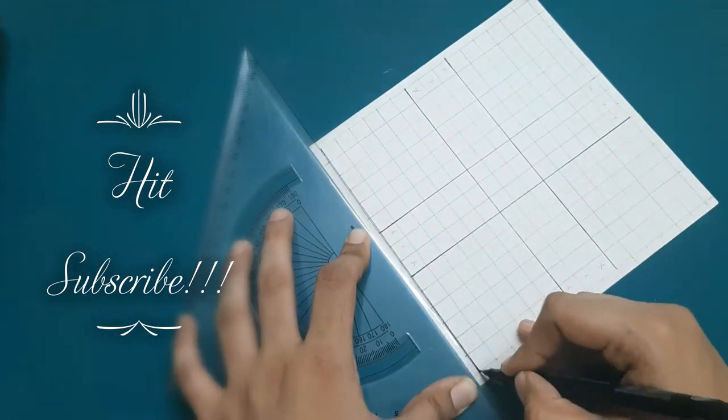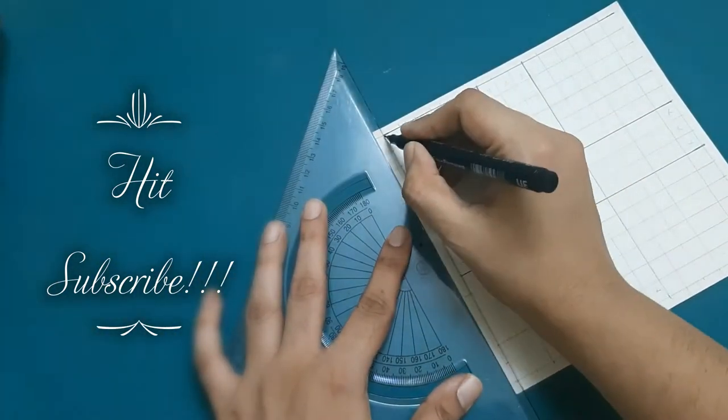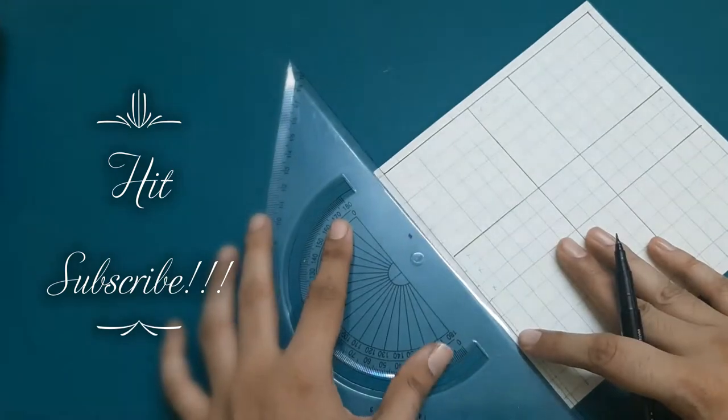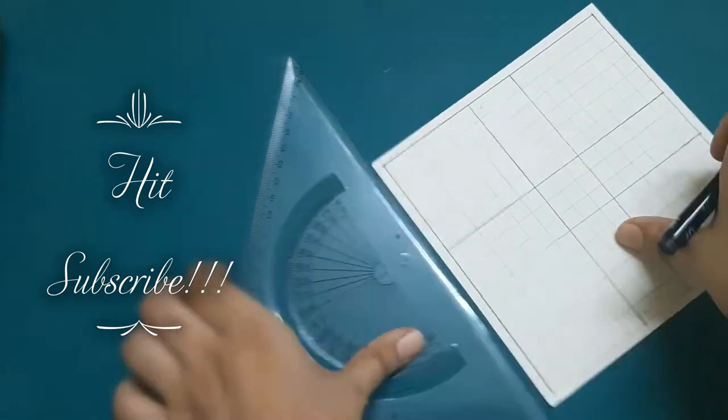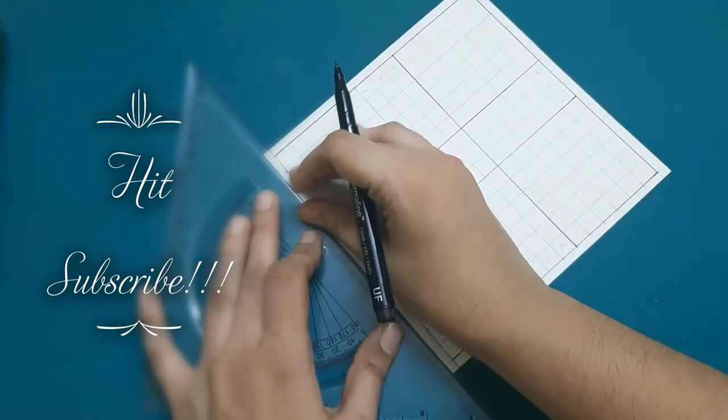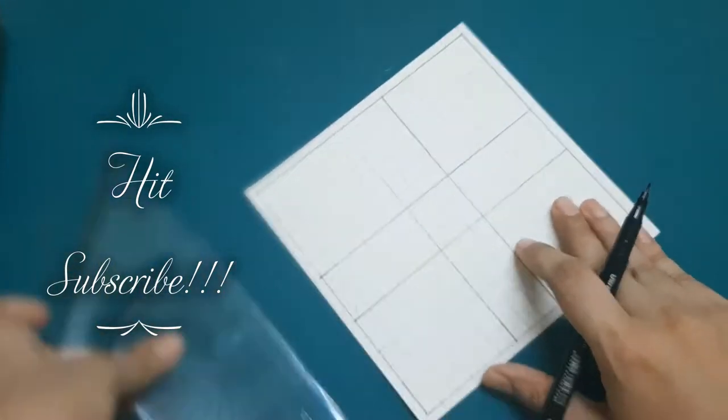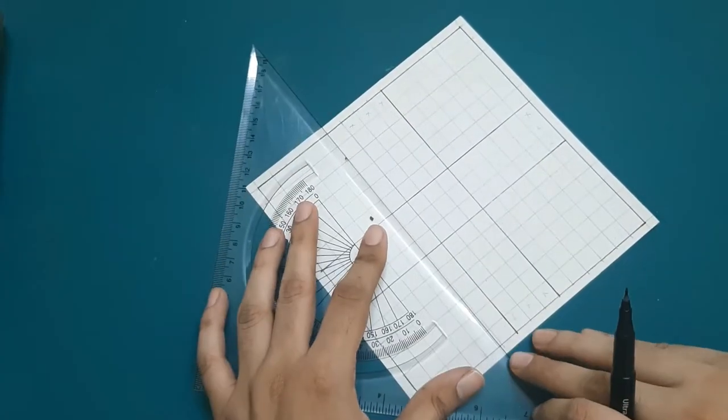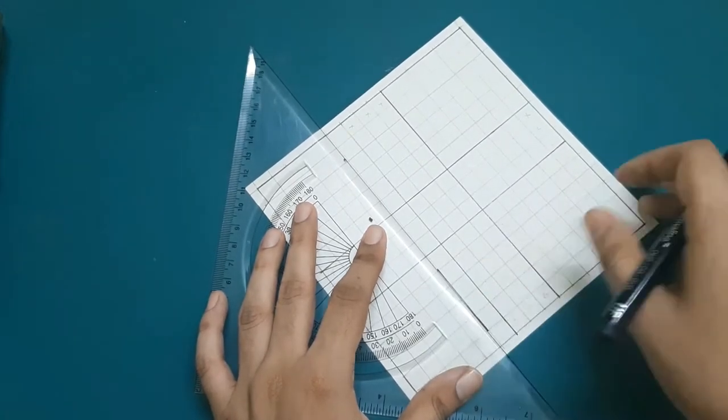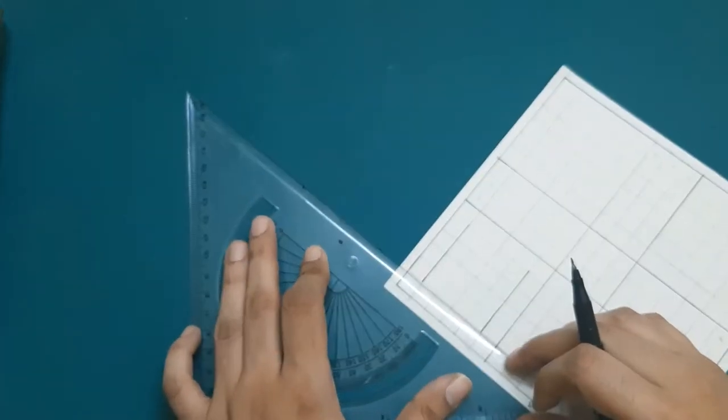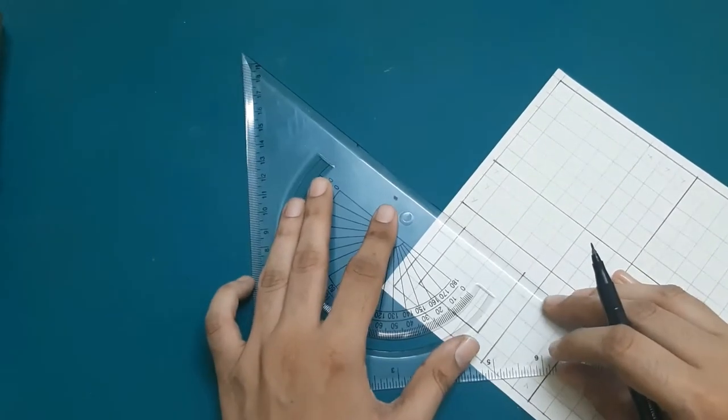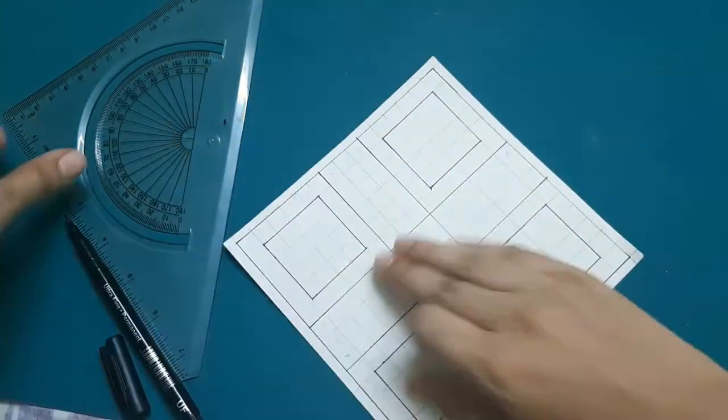And I will first go ahead and mark the borders for my board. It is going to be very easy from here on because you have already created the 1 cm tiny squares. Now, inside each of the 6 cm squares, I will create a smaller 4 cm square like this. I will do this on all 4 sides.